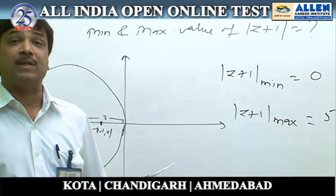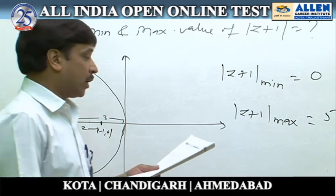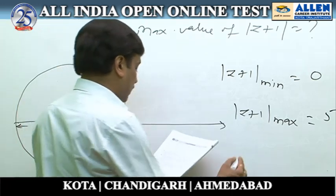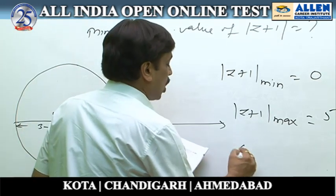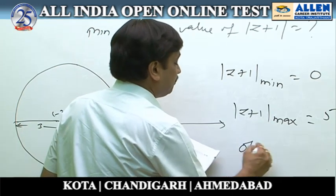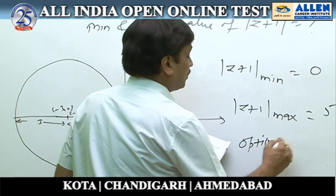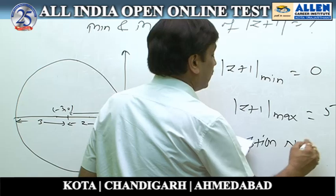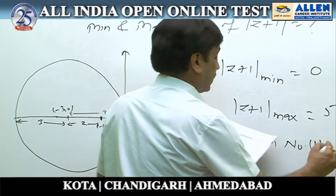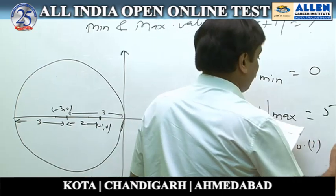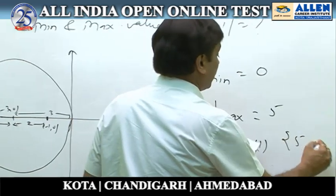So the minimum value is 0 and maximum value is 5. According to the given options, option number 1 is correct, giving the maximum value of |z + 1| as 5 and minimum as 0.